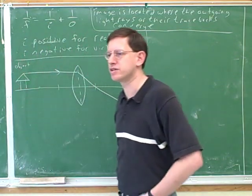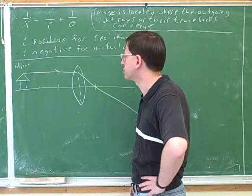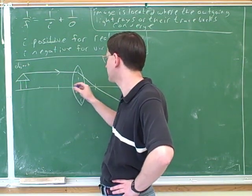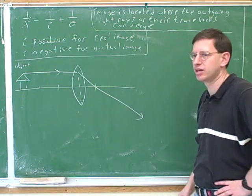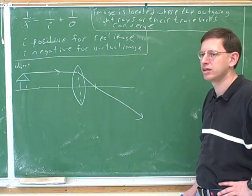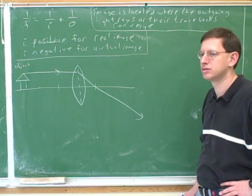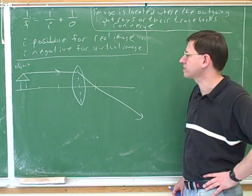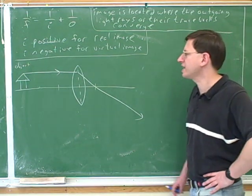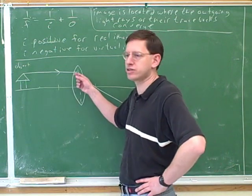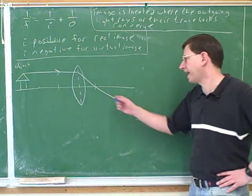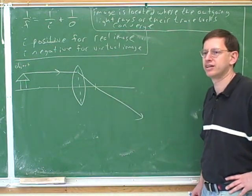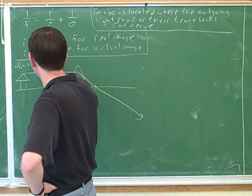We often draw an object as an arrow. It's also very helpful to draw a center line called the axis or the principal axis, which we draw through the center of the lens or mirror. Now we have to focus on where the incoming and outgoing light is. The incoming light is coming in towards the lens or mirror.